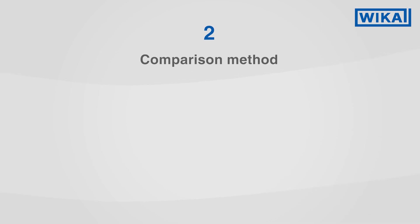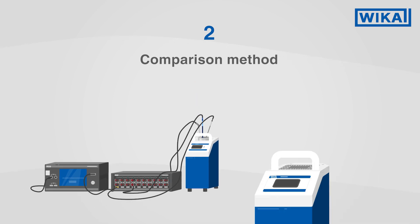With the comparison method, the measured values of the calibration item are compared with a reference thermometer. For this, the test item and reference thermometer are put into a calibration bath, into a dry well calibrator, or into a tube furnace.